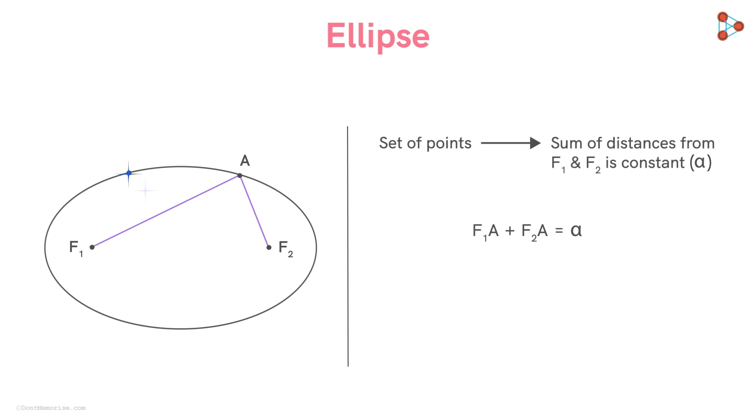Let's say we take a point B on the ellipse. Then the sum of its distances from the points F1 and F2 will be alpha. Let's take another point C here. Again, the sum of its distance from these two points will be alpha.